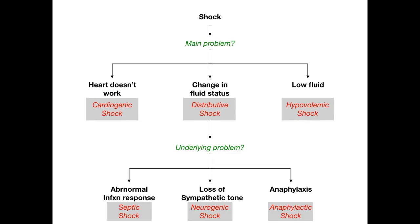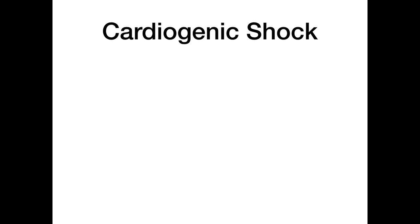Now that I've shown you how to conceptualize this, let's go through each of the five types of shock one at a time, covering the underlying causes and pathophysiology. We'll wrap up each type with that chart of up-down arrows, and I'll even throw in some mnemonics at the end. Let's start with cardiogenic shock — this is because the heart won't work, hence the name.